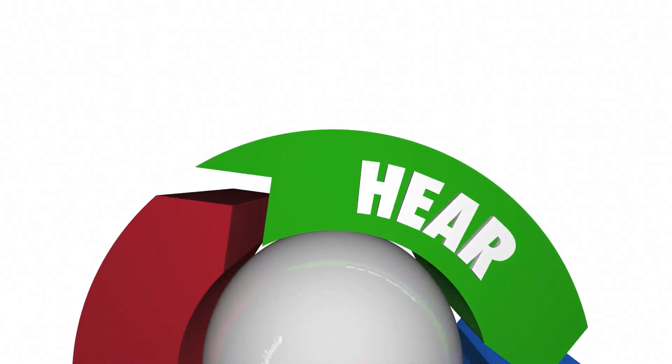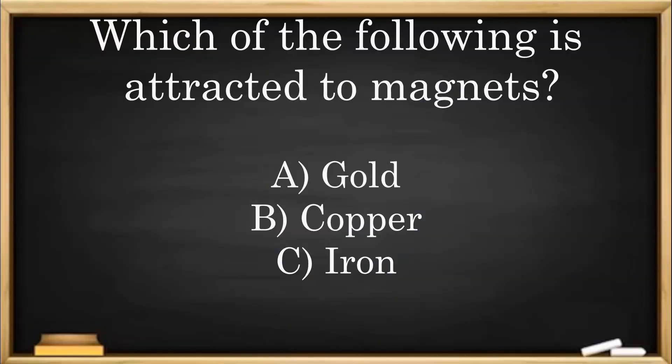Check for understanding. Which of the following is attracted to magnets? A. Gold. B. Copper. C. Iron.